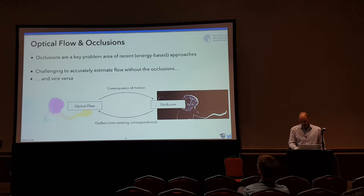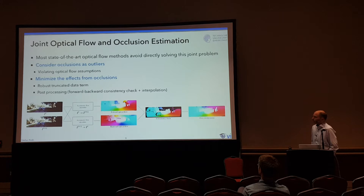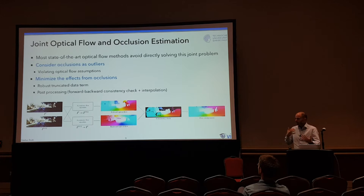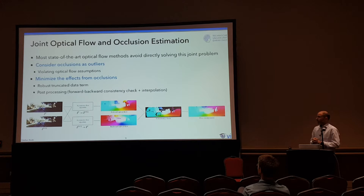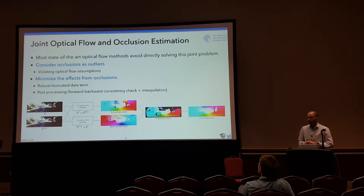Most approaches try to avoid solving this problem directly. They consider occlusions as outliers that violate optical flow assumptions, and try to minimize the effects from the outliers using a robust matching term and post-processing. In the classical pipeline, you take two images, run an asymmetric optical flow algorithm forward in time, swap the order of images and run backward, then check where the two agree. Where they agree, you likely don't have an occlusion; where they disagree, you might. Algorithms tend to interpolate in those regions. The problem is occlusion is dealt with as a post-hoc fact — when estimating flow in the first place, occlusion is not taken into account.